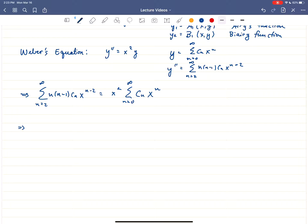So when n is equal to 2, we get 2 times 1, c sub 2, x to the 0. When n is equal to 3, we get 3 times 2, c sub 3, x to the 3 minus 1 is x to the 1. So we'll see 6c₃x plus the sum starting at 4. From 4 to infinity, n times n minus 1, c sub n, x to the n minus 2.